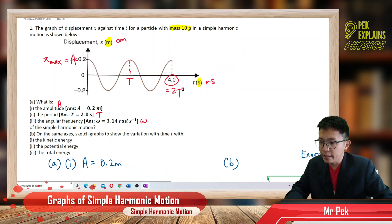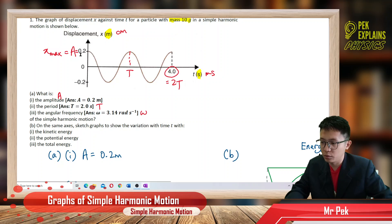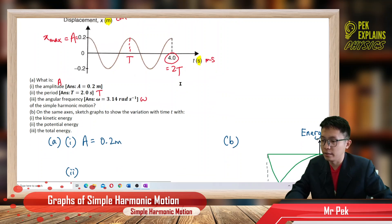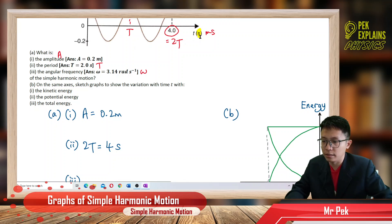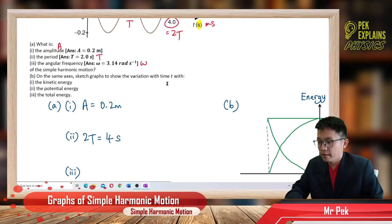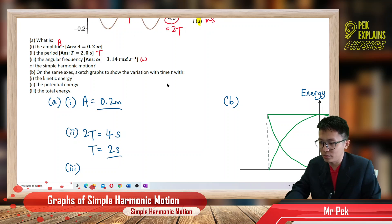For the period, from crest to crest is one period. We can see two complete waves, so two periods equal four seconds. Therefore one period equals four divided by two, which gives us a period of two seconds.